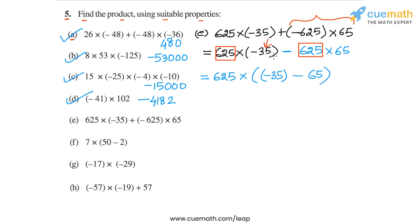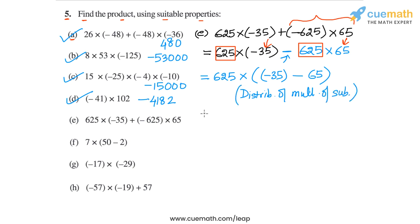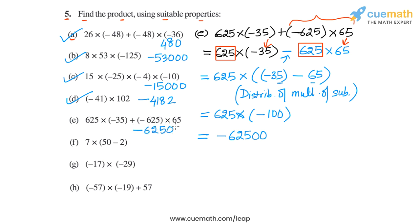The property used here is distributivity of multiplication over subtraction. Now minus 35 minus 65 equals minus 100, and 625 into minus 100 is very easy to calculate — it equals minus 62,500. So in part E, the answer is minus 62,500.